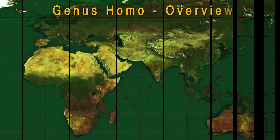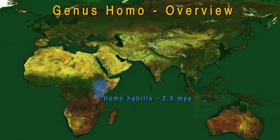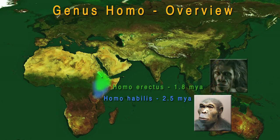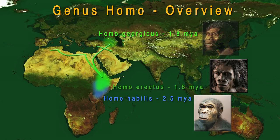Homo habilis was thought to be the first representative of the genus Homo, making an appearance roughly 2.5 million years ago. Homo habilis is thought to have arisen out of the Australopithecines, especially as represented by the species Australopithecus garhi. Around 1.8 million years ago, we would find the appearance of Homo erectus. Homo erectus in Africa is known as Homo ergaster. Somewhere in this time frame, we would find Homo georgicus appearing near the Black Sea in the present-day Republic of Georgia.